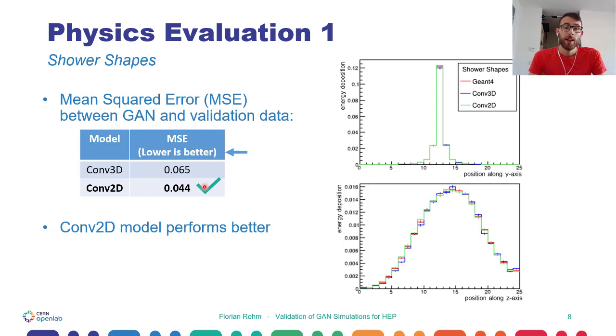On the right side, we can see the shower shape plots. If you look very detailed, one can see that the convolutional 2D model in green follows the Geant4 simulation in red very closely, and that the convolutional 3D model in blue is at some pixels slightly off. This we can see, for example, if we look here, or here, or here.